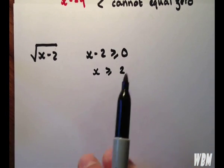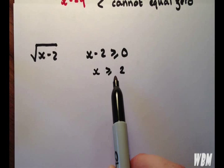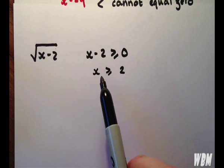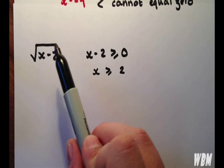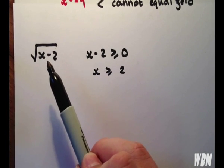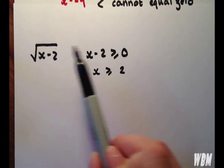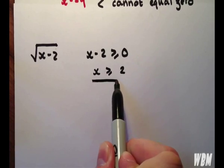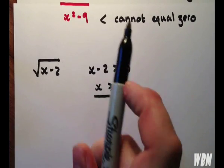Now, this ensures that anything that we put in is greater than or equal to 2 will be a positive number, including or greater than 0. So that's eradicated the one problem, but we have to make sure that we don't forget about that after we finish looking at the denominator.